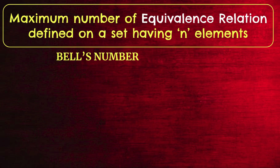To construct Bell's number, you need to know Bell's triangle. It looks like Pascal's triangle but the construction is entirely different. The first row is 1. The second row also starts with 1, and has 2 elements. The third row has 3 elements, and so on — similar in shape to Pascal's triangle but constructed differently.